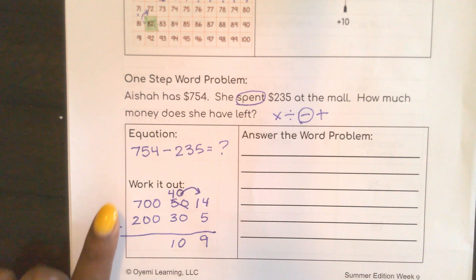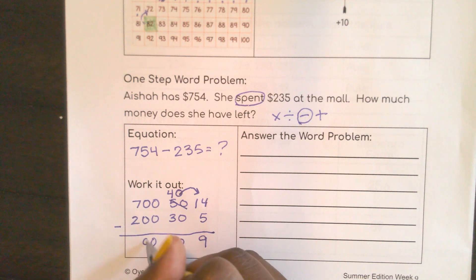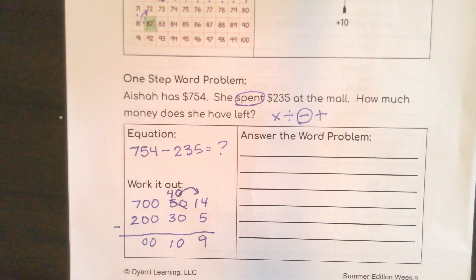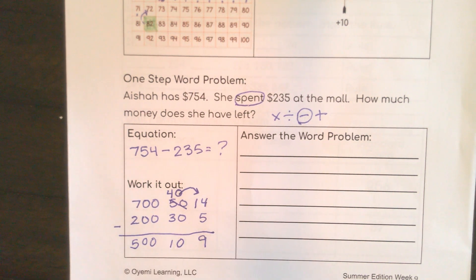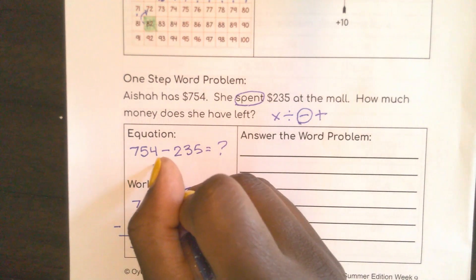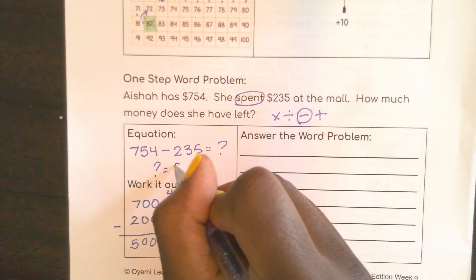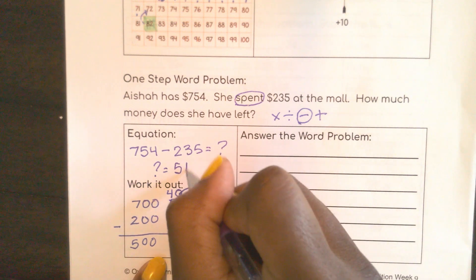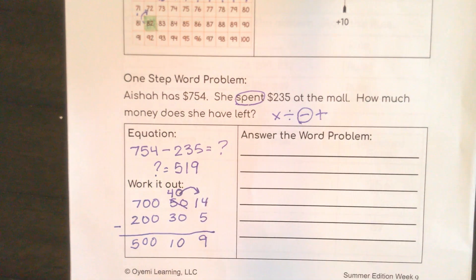700 minus 200 — that's seven minus two, and these are just my zeros. That would be 500. So now I know that my answer equals 500, 10, and 9 ones — 519.